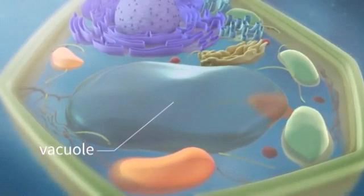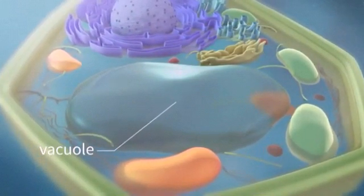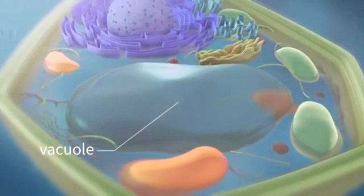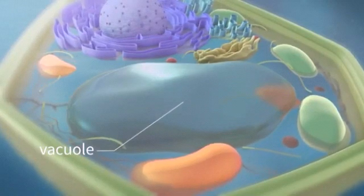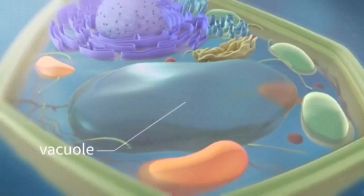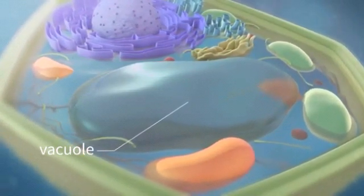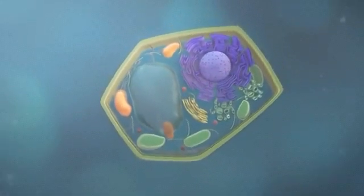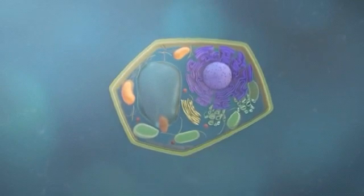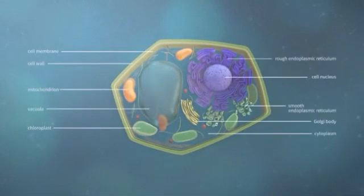It is covered by tonoplast and filled with tonoplasm or cell sap. Cell sap is mainly water and other stored food materials. All these organelles of the plant cell cooperate together, ensuring the proper functioning of a plant cell. These organelles are commonly found in all the plant cells, irrespective of the type of plant cell.